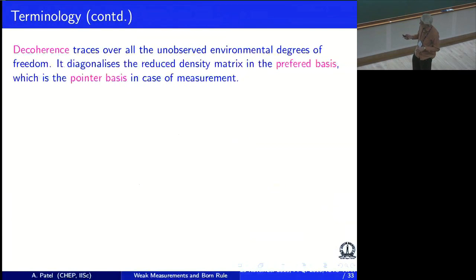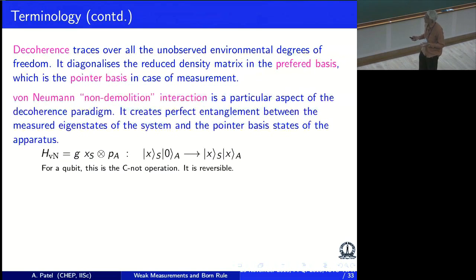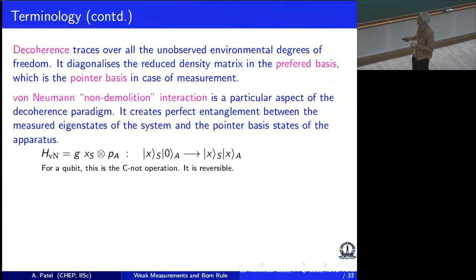Some other words: when I describe interactions with decoherence, it already chooses what is called a preferred basis — the basis in which the density matrix becomes diagonal — which is dictated by what kind of interaction there is. Sometimes it is also called a pointer basis. There is something called a quantum non-demolition interaction, which is also a part of the decoherence paradigm. It is a unitary interaction with a well-defined Hamiltonian that can be experimentally realized easily, so that for every state of a system one can transform the apparatus into a related state.